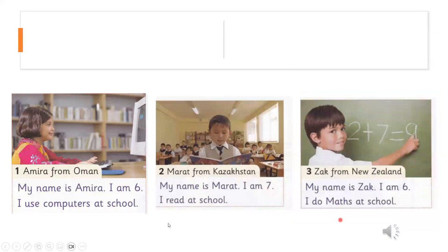Track 7. My name is Amira. I am 6. I use computers at school. My name is Marat. I am 7. I read at school. My name is Zach. I am 6. I do maths at school.